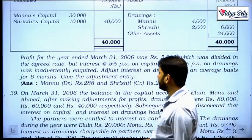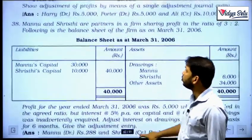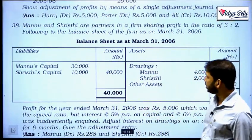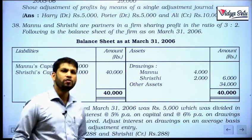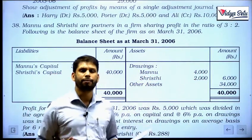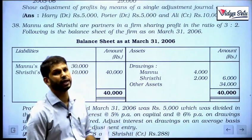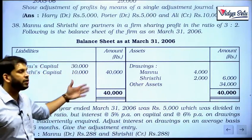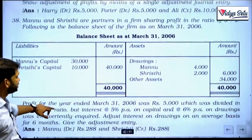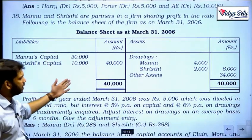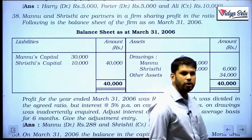They have not told us what is the agreed profit sharing ratio. In this type of question where we do not know the agreed profit sharing ratio, we cannot give back the profit. What we can do is we can only rectify for the mistakes. The first mistake is of interest on capital and another mistake is of interest on drawings.